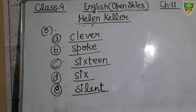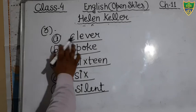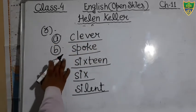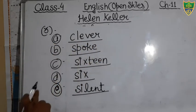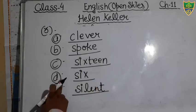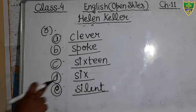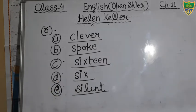So these are the words to fill in the blanks for exercise number three. In the first blank, fill 'clever.' In the second blank, fill 'spoke.' In the third blank, fill 'sixteen.' In question D, fill 'six.' In question E, fill 'silent.' Complete it in your book and you can also take a screenshot.